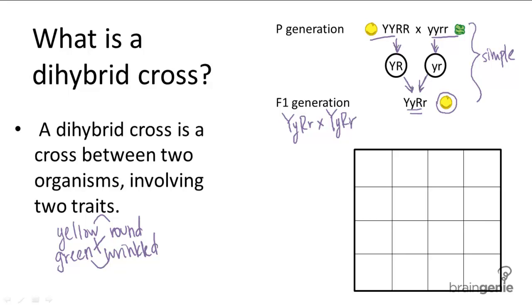Now by the law of independent assortment, the gametes formed by each of the heterozygous individuals can be as follows. Notice how all the original characteristics are still there, but in different combinations. You can have yellow round and green wrinkled as well as yellow wrinkled and green round alleles in each of the gametes. Because you have two heterozygous individuals with the same genotypes, the second individual also has the same gamete combinations.